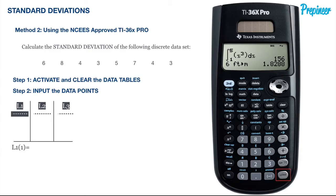Now that all the tables are cleared of data, we want to input the data points. We will be on a screen that looks similar to this one, where you will fill in all the data points given in the problem. We are working with univariate statistics here, or one variable statistics, so we are only concerned with the L1 column, which is where all of our X values will be input.